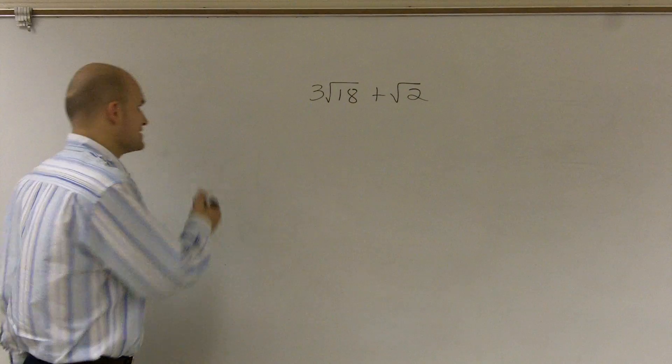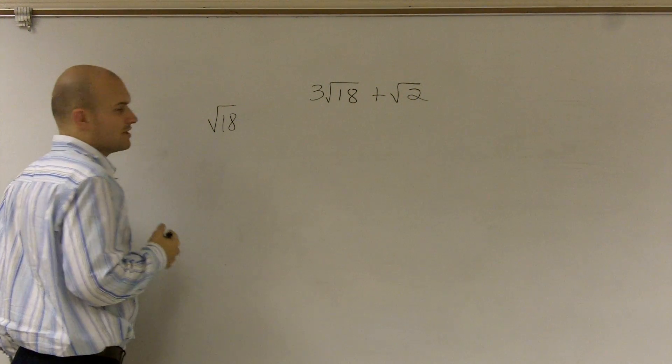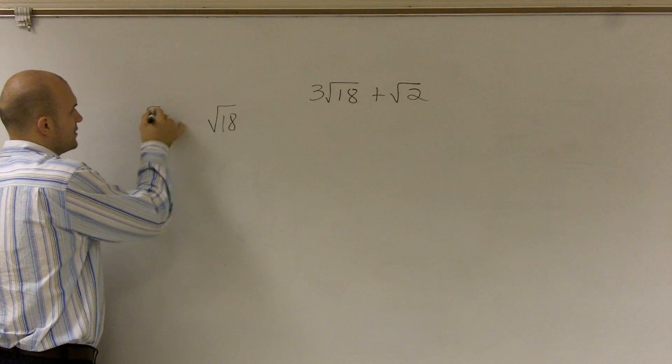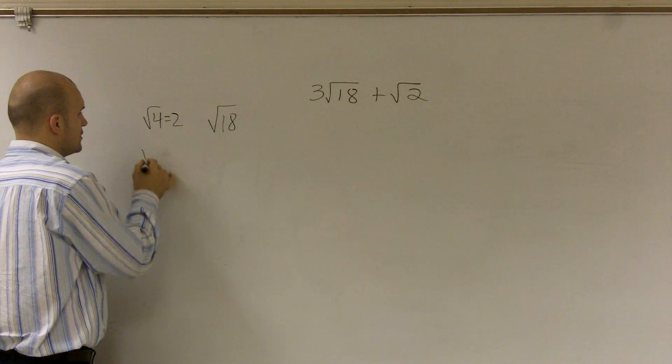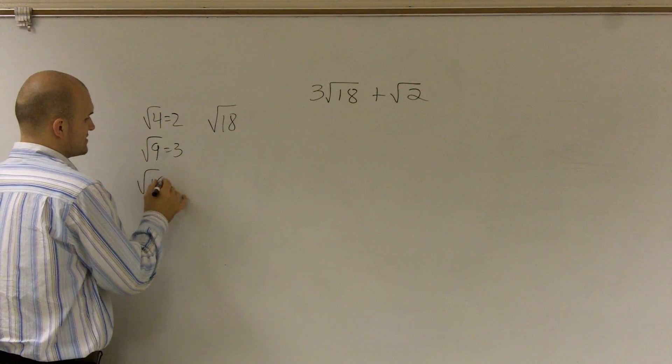There's a couple ways you could simplify the square root of 18. Now, since the square root of 18 is not a square number, I look at what square numbers do I have. Well, I know I can take the square root of 4 is 2, square root of 9 is 3, square root of 16 is 4.